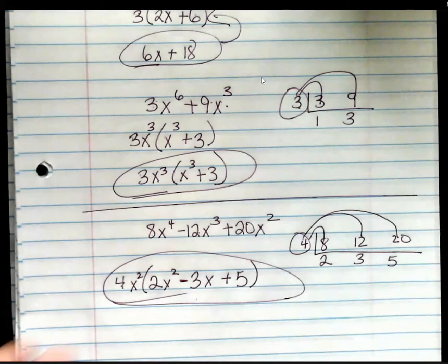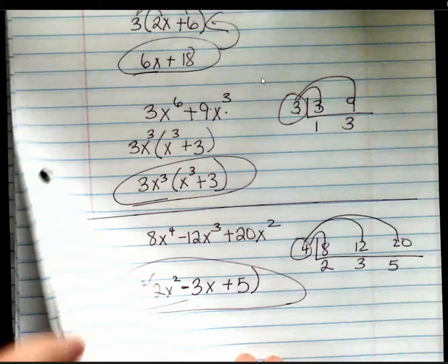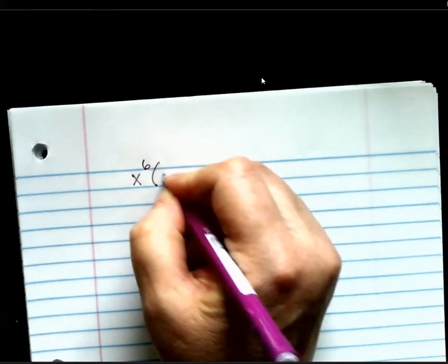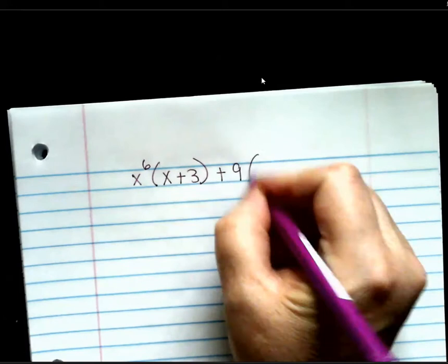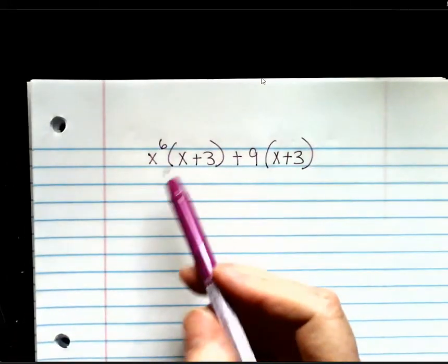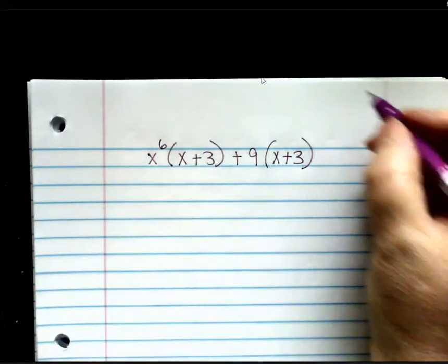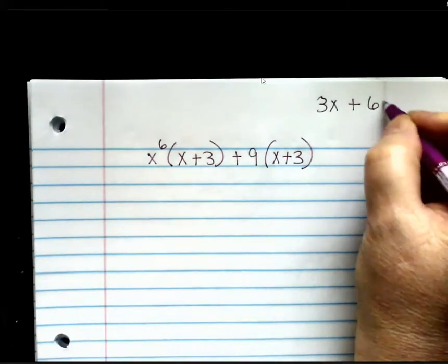So, let me show you something that is the exact same thing, but instead of just one digit, we're pulling out a binomial. So, let's say that I had x to the 6th times x plus 3 plus 9 times x plus 3. Now, your greatest common factor,